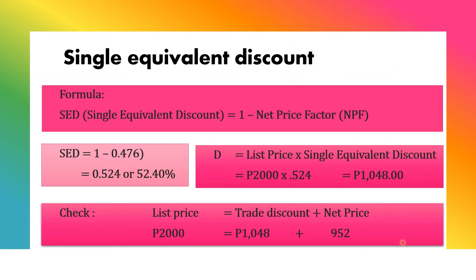To verify: list price equals trade discount plus net price. Our list price is 2,000, the trade discount is 1,048, and the net price is 952. The equation is balanced, confirming our computation is correct.